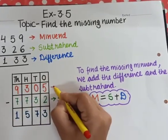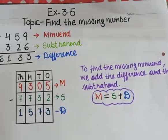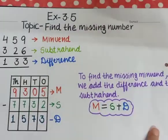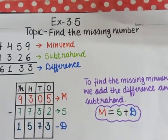So this is my minuend. I am repeating again, for finding the missing minuend we add the difference and the subtrahend.